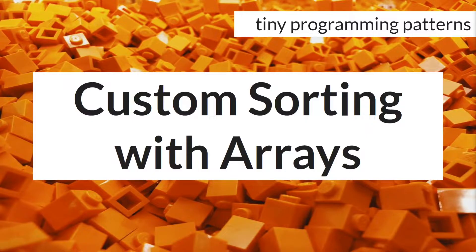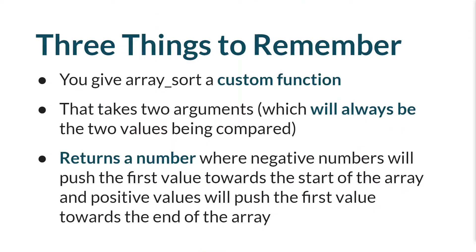To write a custom sort function, you want to remember three things. First, you must write the custom function yourself. Second, that custom function always takes two arguments, and those two arguments will always be two values from your array. Third, your custom function needs to return a number. If the number it returns is negative, the first of the two values passed in will be pushed towards the start of the array. And if it is positive, the first of the two values will be pushed towards the end of the array.